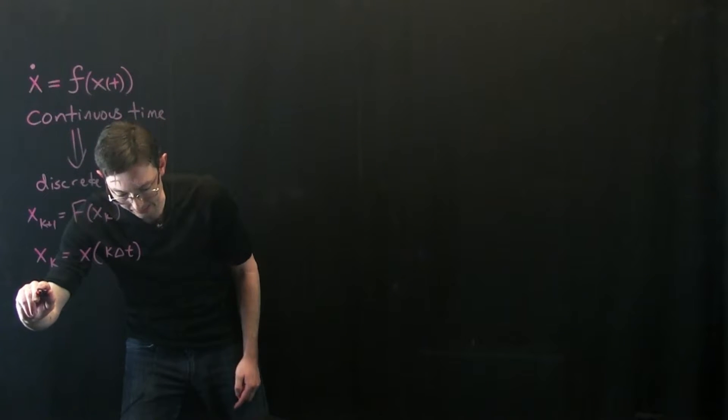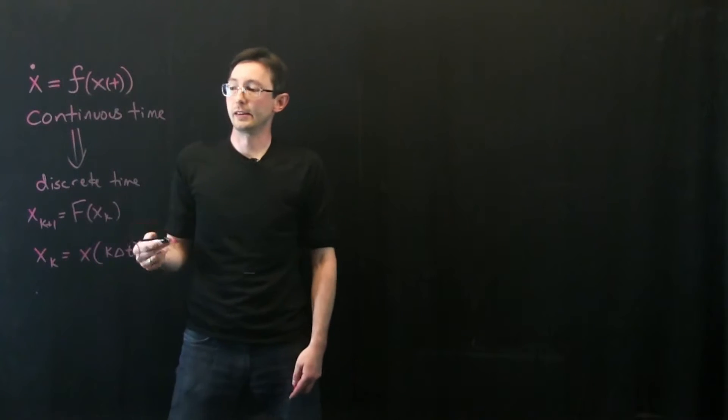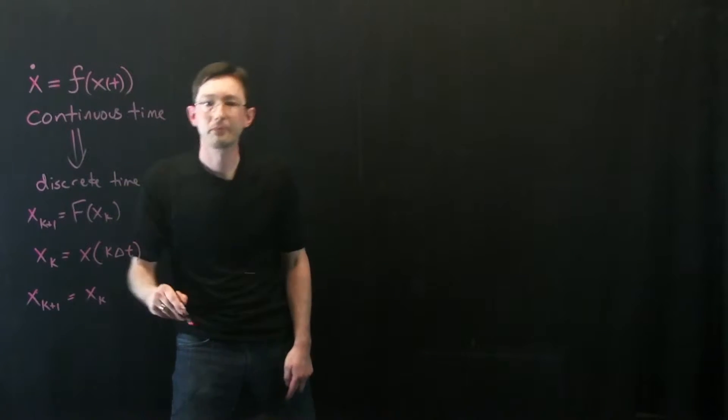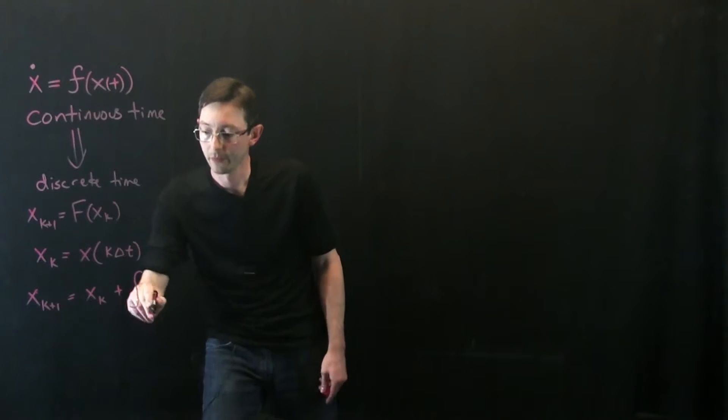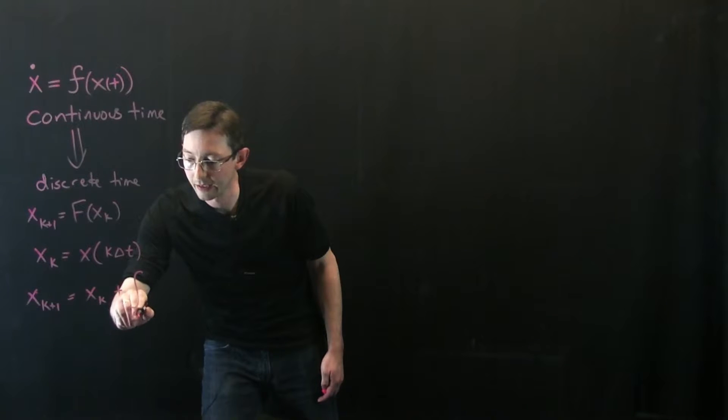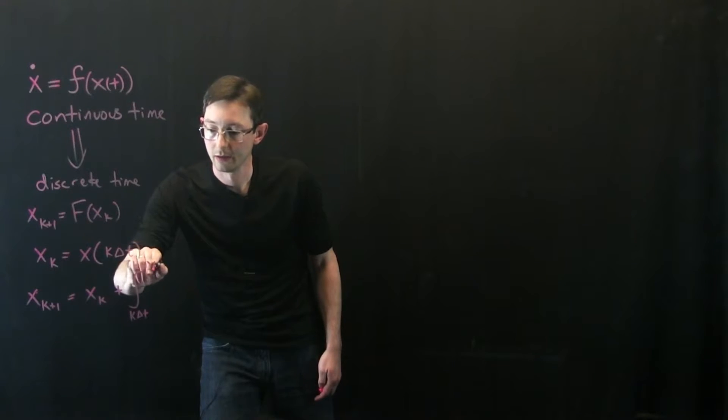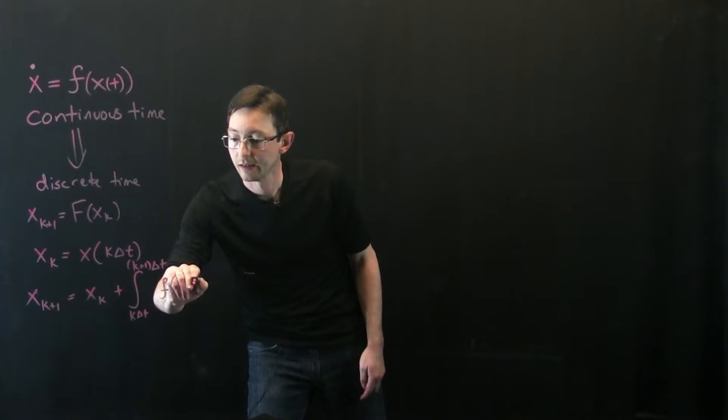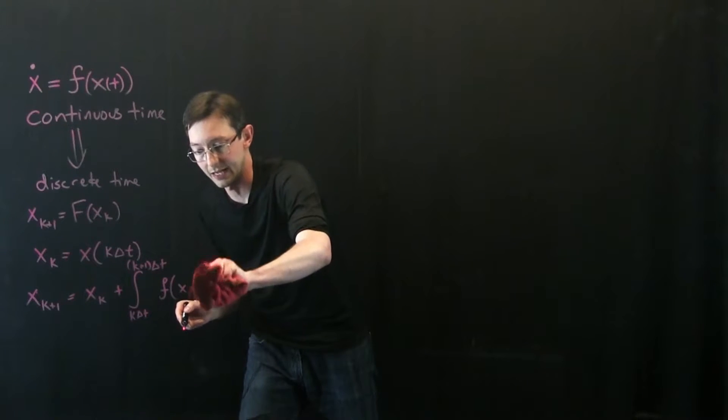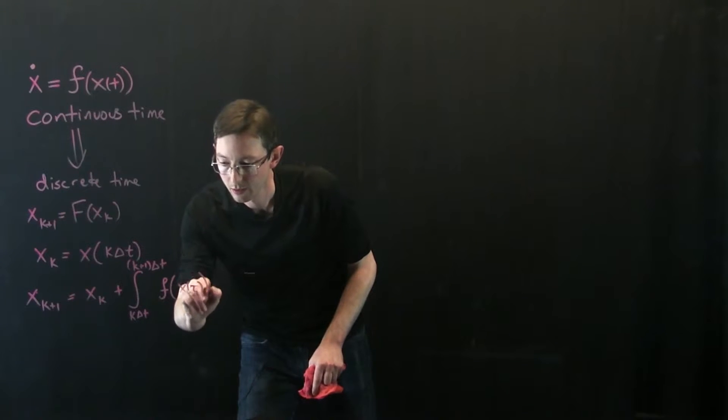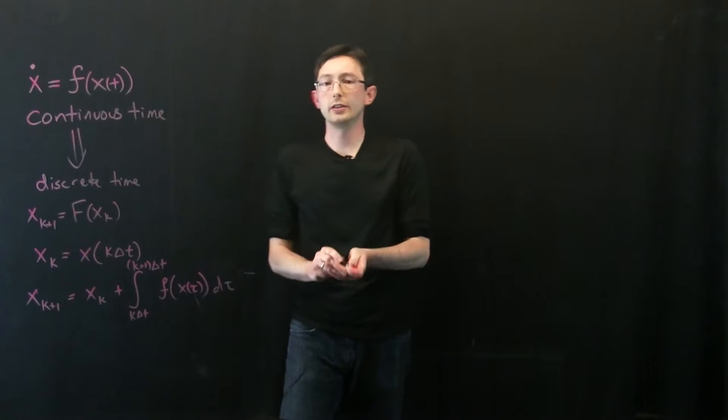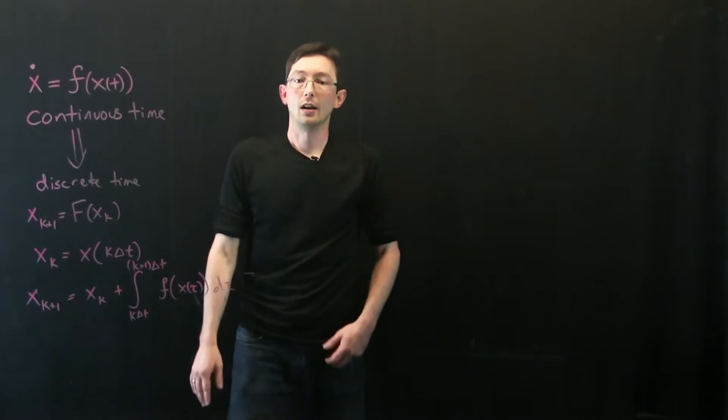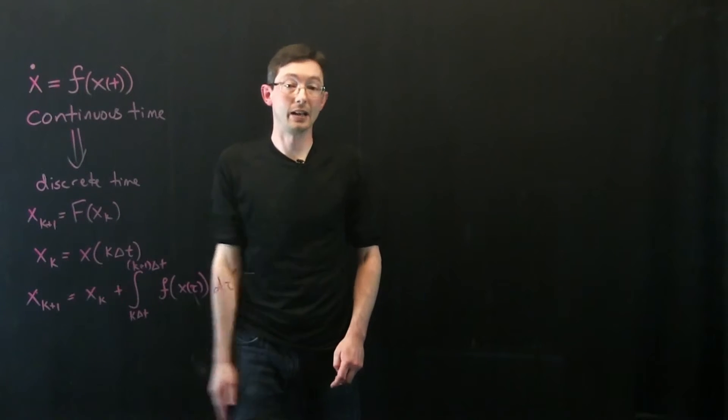I could basically say x at time k plus 1 is equal to x at time k plus the integral from k delta t to k plus 1 delta t of f of x of tau d tau. So essentially what I can do is I can integrate my trajectory through this dynamical system for one delta t and that will give me my next time step x at k plus 1.